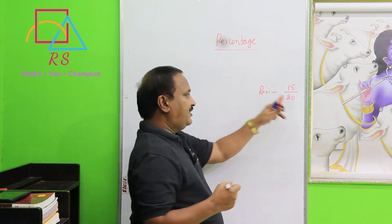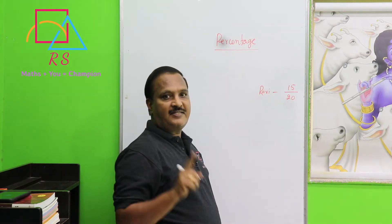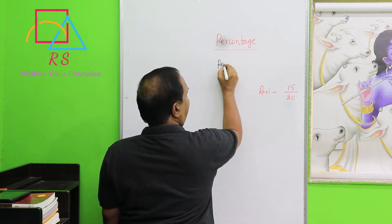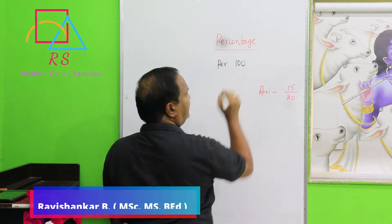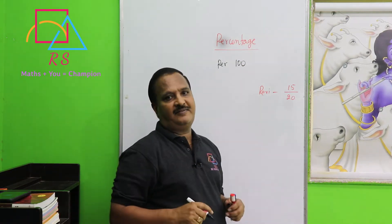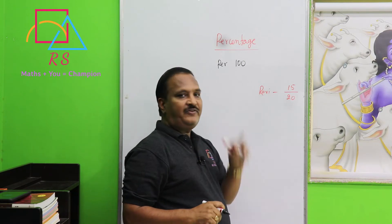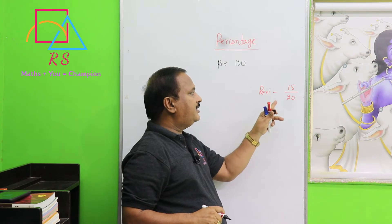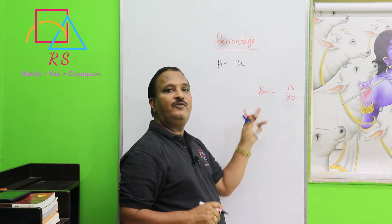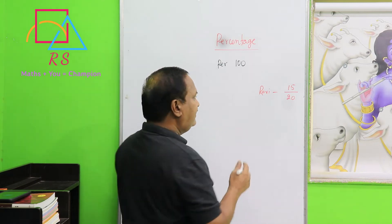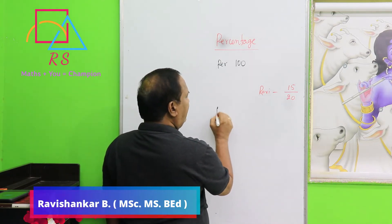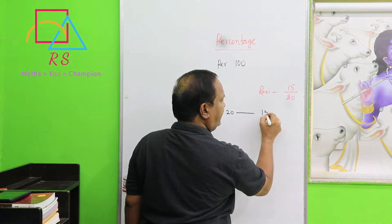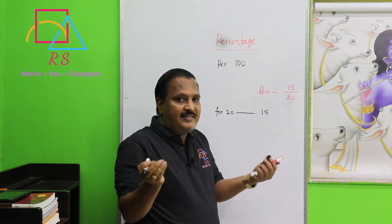So let us find out this, and let me explain what percentage is first. Percentage means 'per 100' — 'cent' means 100. This is 15 per 20, but we need it per 100. If you find out per 100, then you will be getting the percentage.